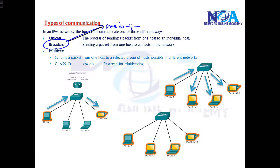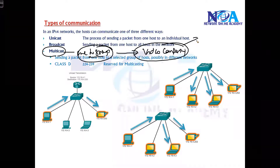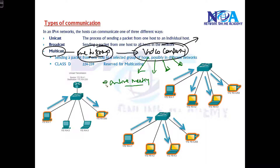The last type is multicast — one to a group. Sending a packet to a group of individuals. For example, in a video conferencing application, only the group of people who have joined that particular conference can listen. Similarly, in an online meeting, only people using that specific link can join the class — it's not for everyone, but for specific people.